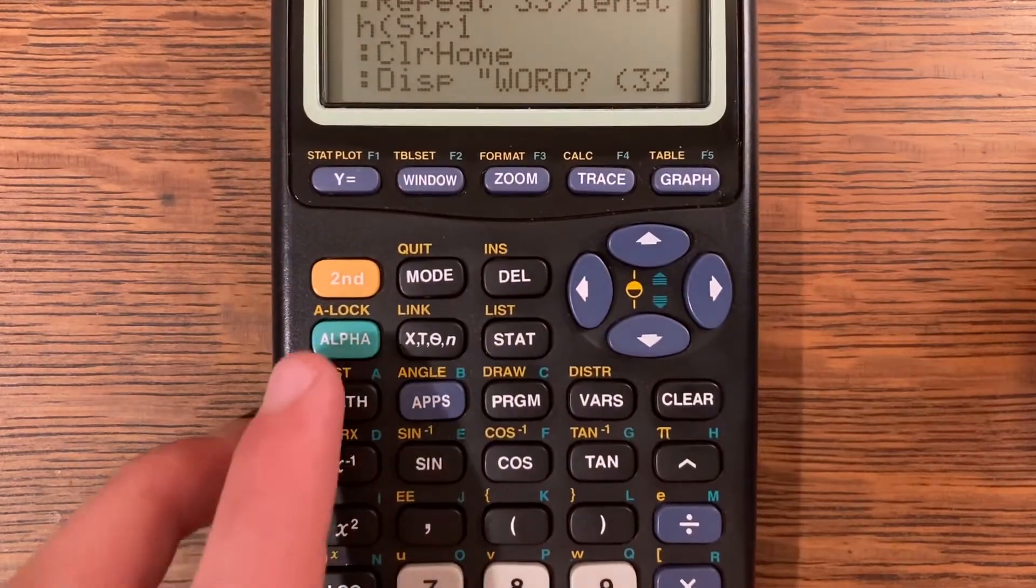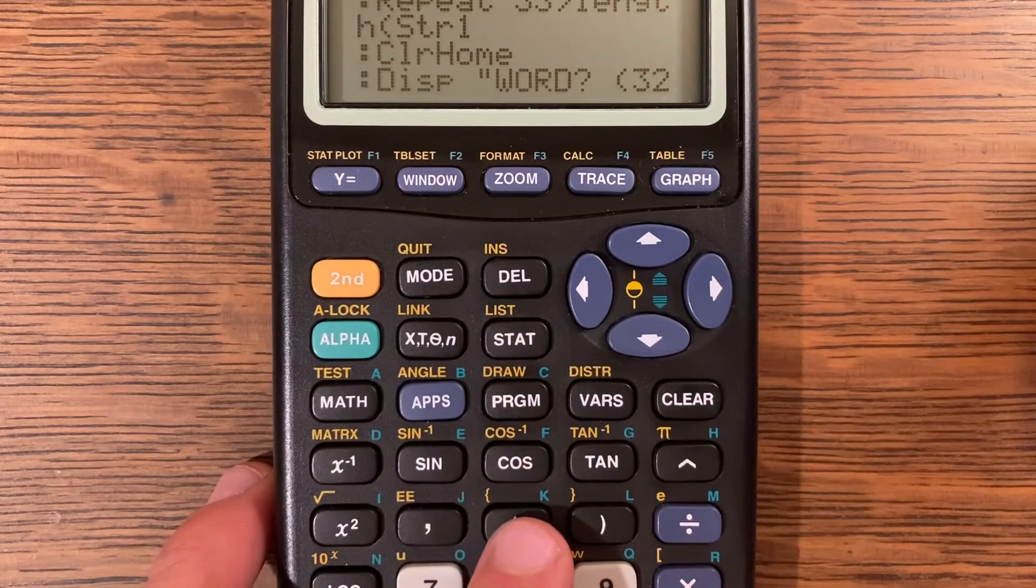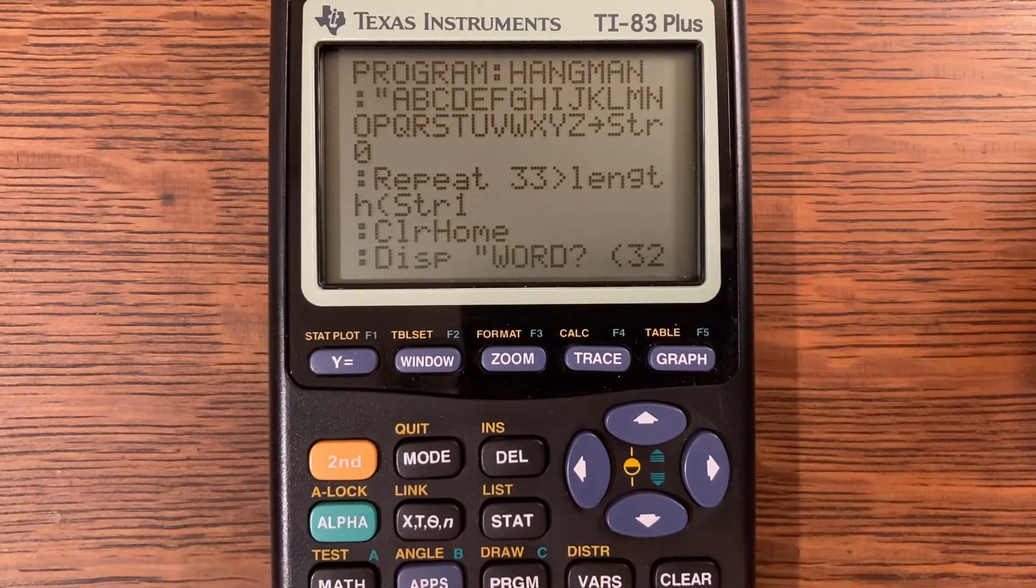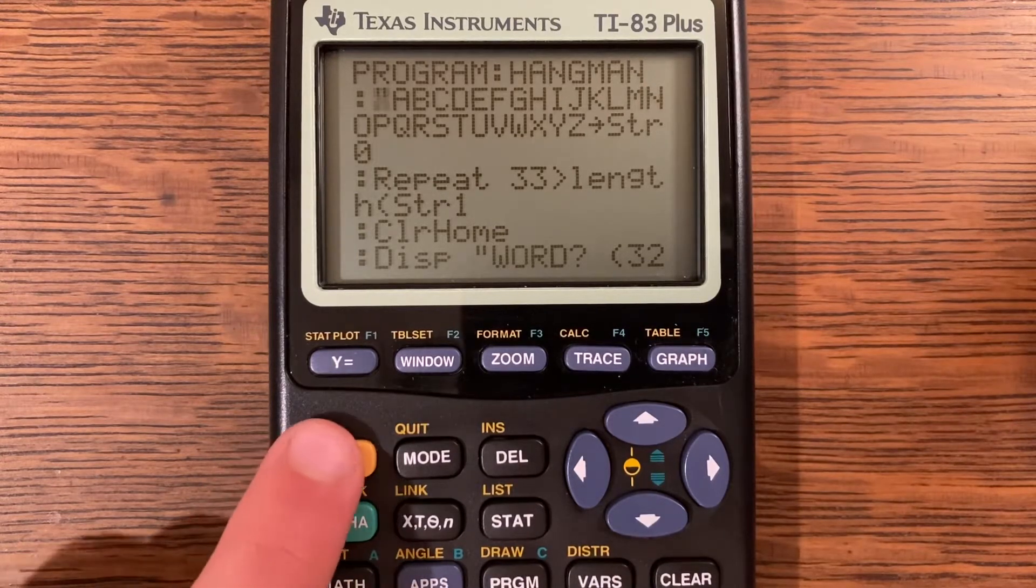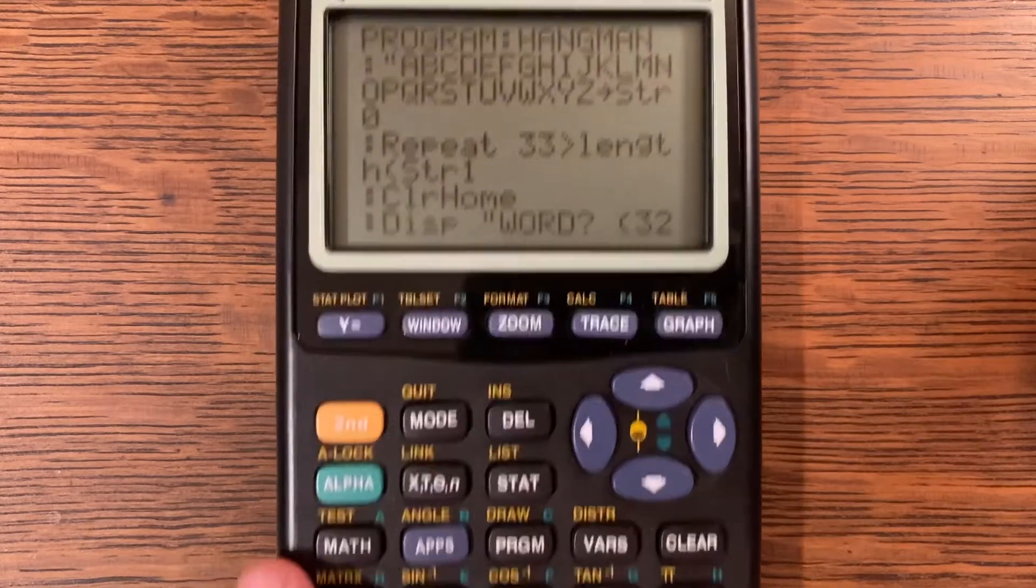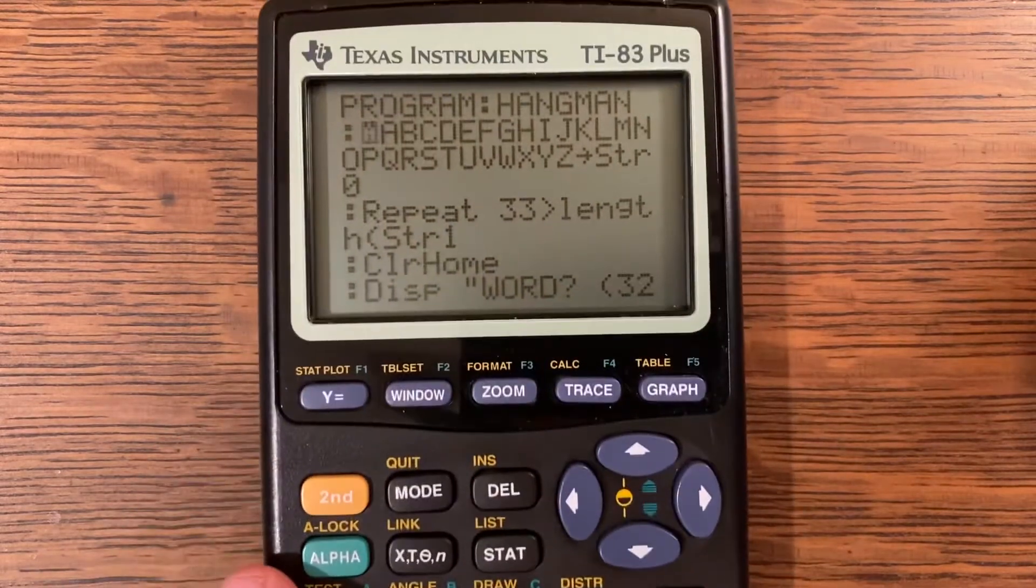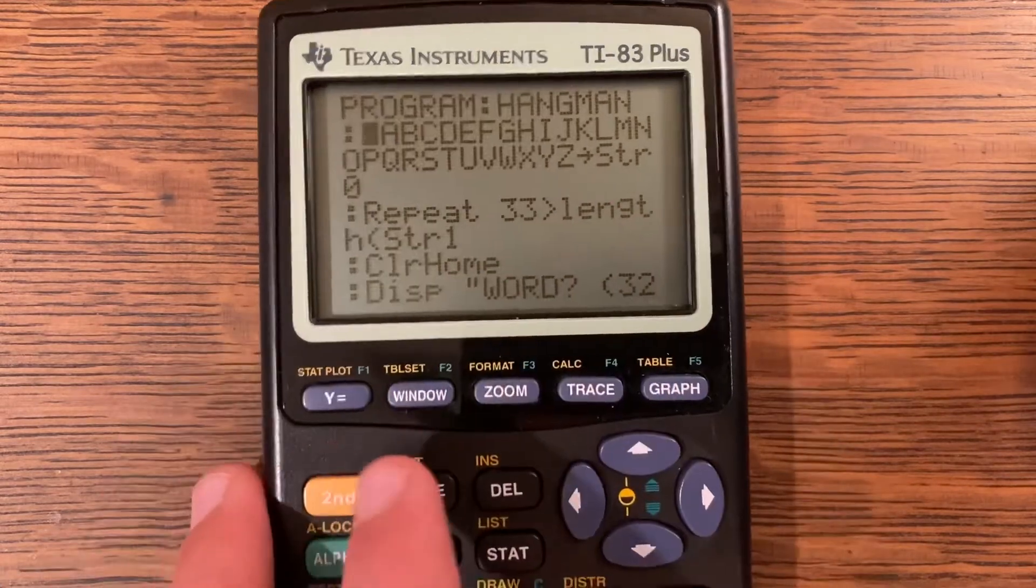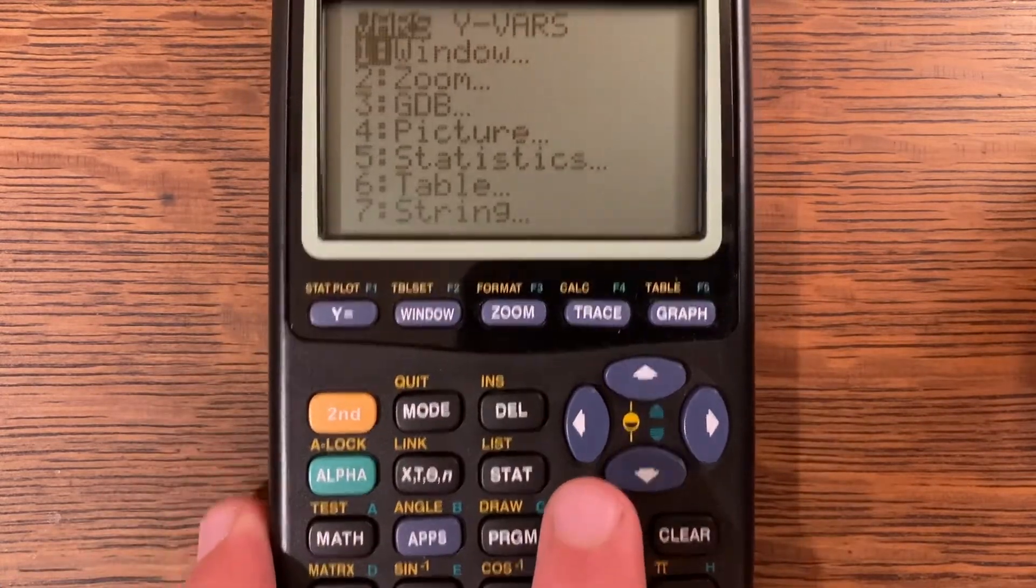If you want a K, you would click alpha in this parenthesis button right here. To get all the letters, I recommend that you put the calculator in alpha lock mode, which you get by clicking second then alpha. Then you don't have to click alpha every time you want to click a letter.